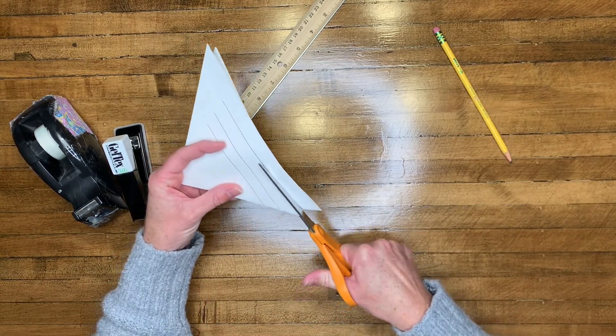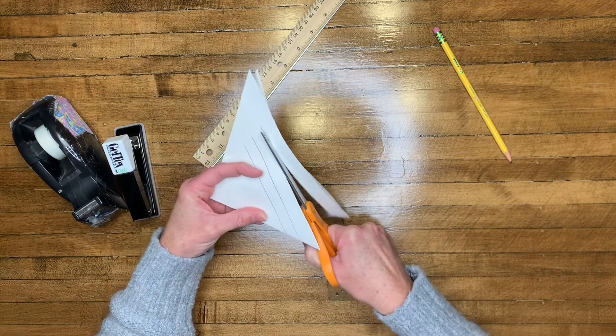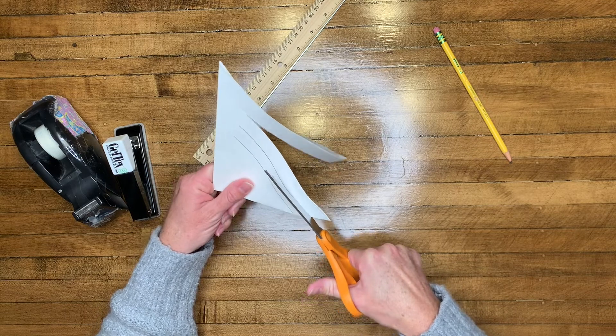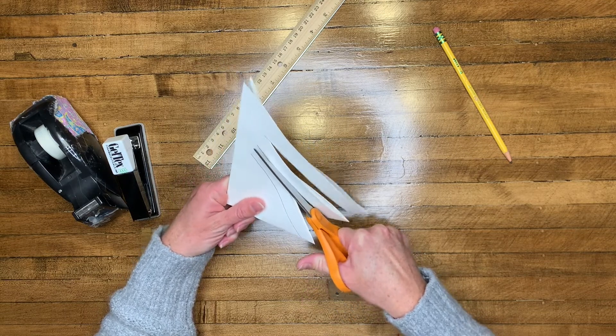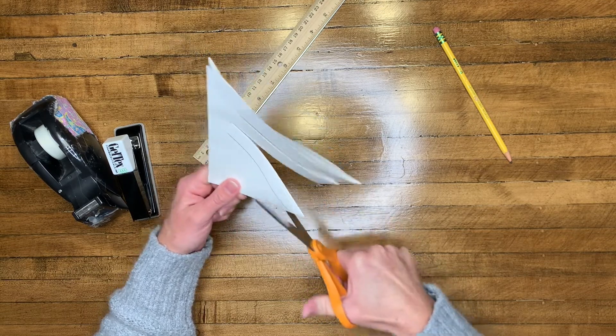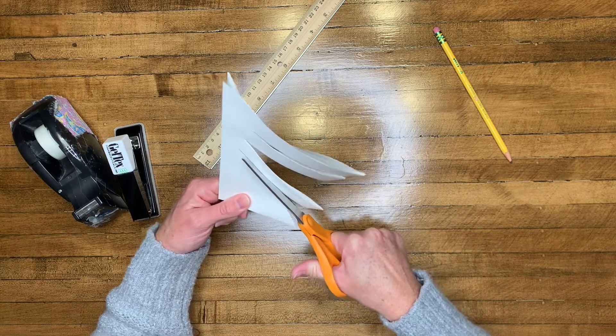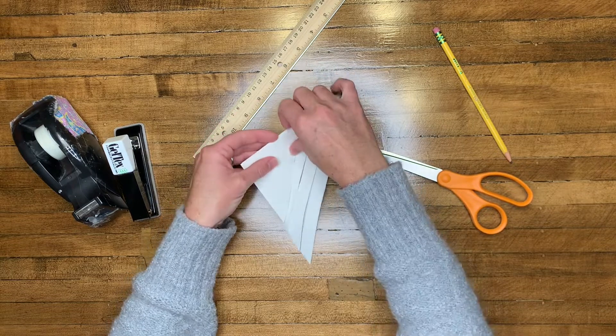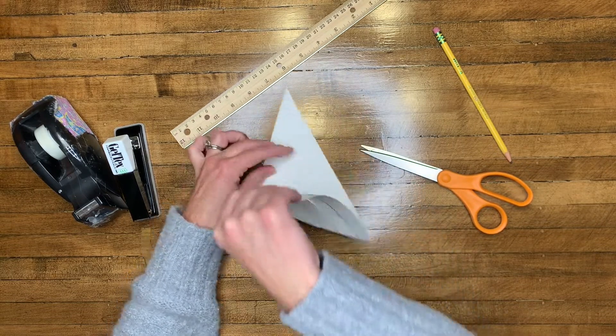When you have your three lines drawn, use scissors and start to cut. Remember not to cut all the way through. Wherever you stop drawing with your pencil, you want to make sure that's where you stop with your scissors. So you're going to cut all three lines and then very carefully you're going to start opening up your piece of paper.